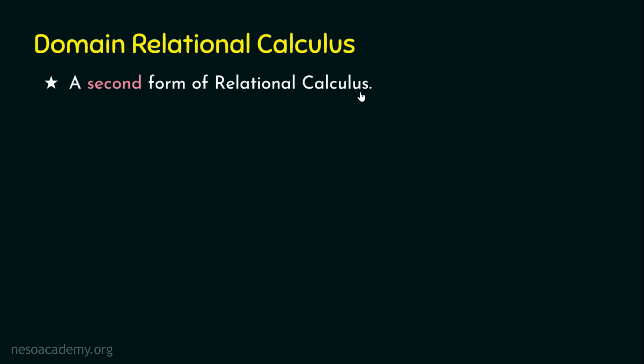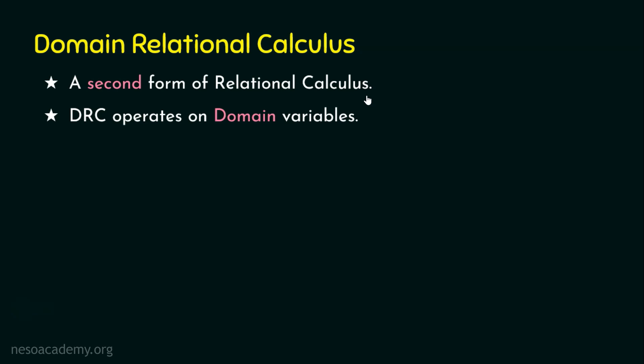Domain relational calculus is a second form of relational calculus. The first form is the tuple relational calculus. If we compare relational calculus and relational algebra, relational algebra is a procedural query language where we need to instruct what to do and also how to do it. But relational calculus is a non-procedural one, meaning we need to specify what to do but we need not specify how to do it.